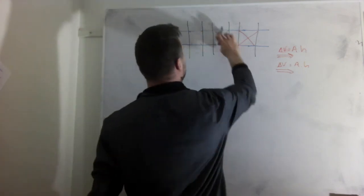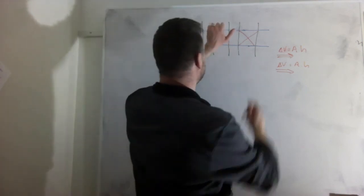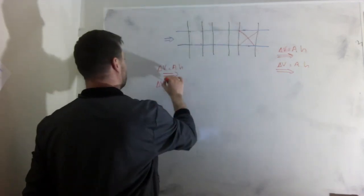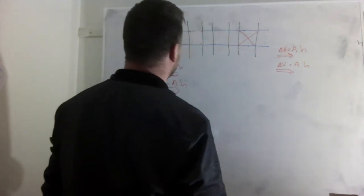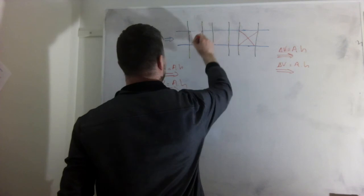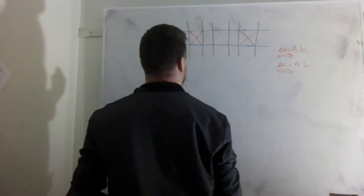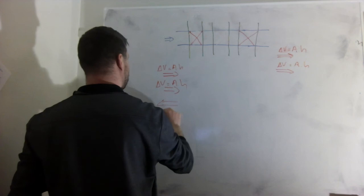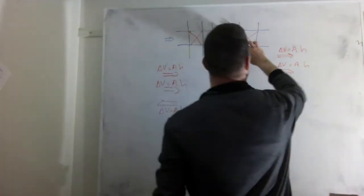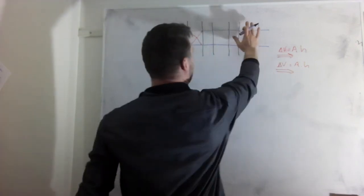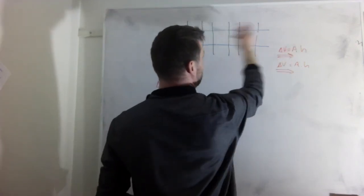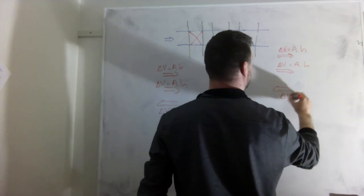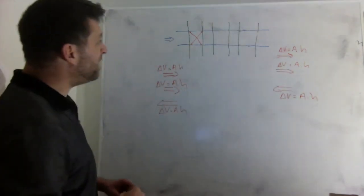Next step I do is I open this valve. Again, it sucks in liquid. The liquid can't come from here because here it's closed, so it has to come from here, so I suck even more liquid here. Now delta V equals A times H. And now the last step, what I do is that I close this one. So what happens then is that I press out liquid. It can't go to the right because here it's closed, it has to go to the left, so I press liquid back here. Delta V equals A times H. And I open this valve. And what this does when I open this here, it will suck in liquid. It can't go from the right because this is closed. It can't come from the left because this is closed, so it has to suck in the liquid from this side. So now I get a flow in this direction of delta V equals A times H. And now I'm back in my start position.